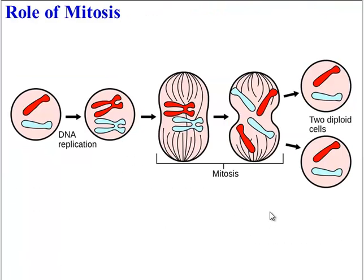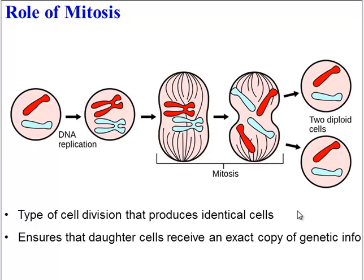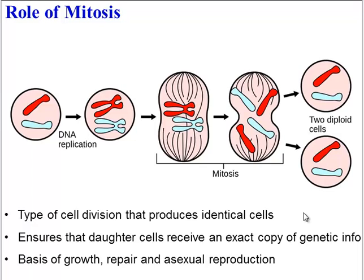So what's the role of mitosis? Why is it so important? Well, it's a type of cell division that produces identical cells. The process ensures that daughter cells will receive an exact copy of all genetic information, and this is important if you're growing. New cells need to have the same instructions as the old cells. And so mitosis is the basis of growth, repair, and asexual reproduction in eukaryotic organisms.